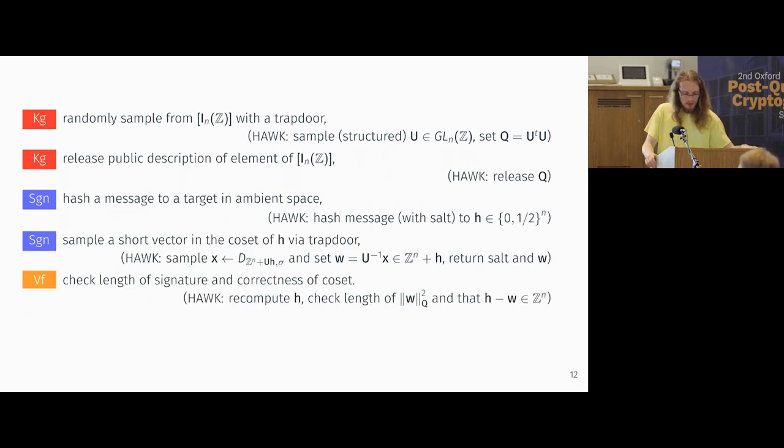So that's how you sign. And then just to finish off the picture, to verify, you need to check the length of a signature and the correctness of coset. And this is just checking the length of W, your signature under Q, and that H and W have an integer difference. And removing a fair amount of technical details, this is the entirety of Hawk.